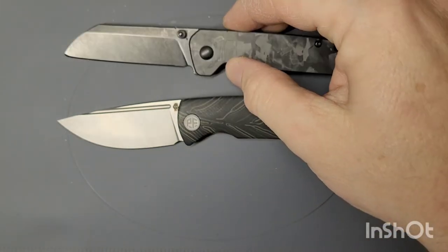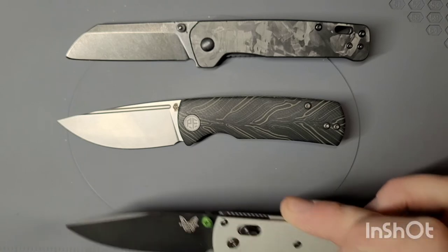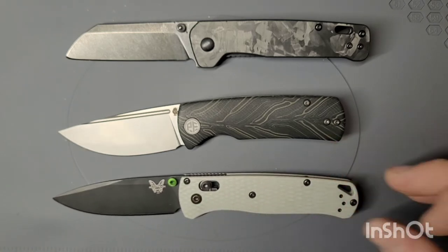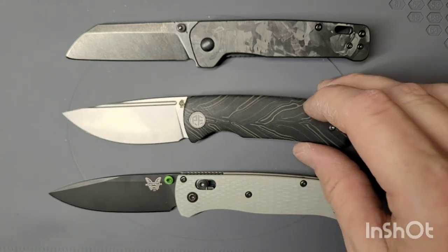The QSP Penguin. And then of course, one of the ones that so many people have, the Benchmade Bugout. Obviously the Bugout's a little longer.